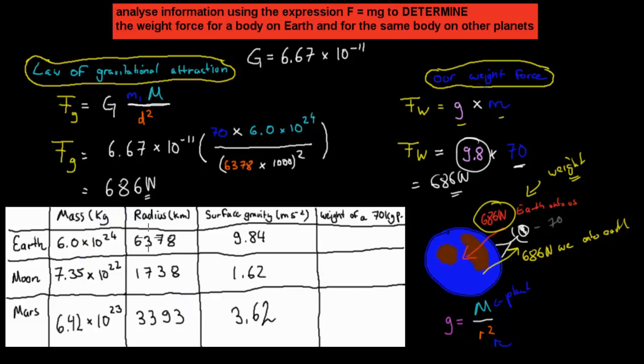We had this data in the last video, and using just the mass and radius of each different planet, we could figure out the acceleration that we would experience on that planet. We know that the Earth had 9.84, we've got 1.624 surface gravity of the Moon, and 3.62 for the gravity of Mars. This is what we did in the last video, we calculated the actual gravity for these different planets.